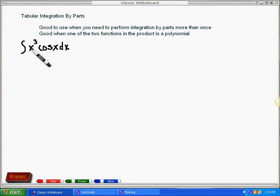However, when you take the derivative of x to the third, it gets simpler and simpler until it disappears, which is why integration by parts works. If you take the derivative of x to the third, it turns into x squared, and then it goes to x, and then it disappears.